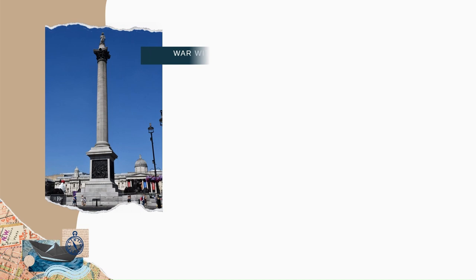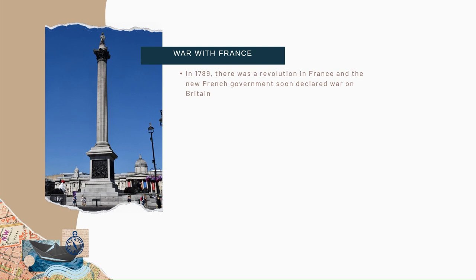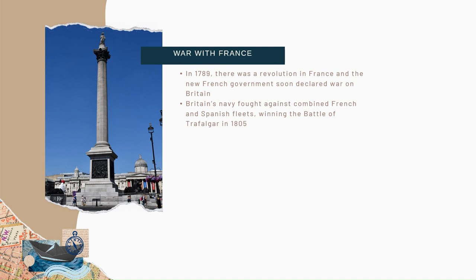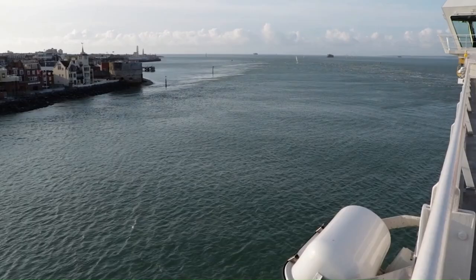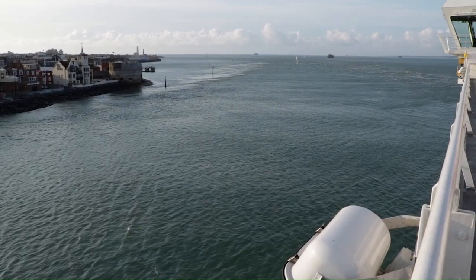War with France. During the 18th century, Britain fought a number of wars with France. In 1789, there was a revolution in France and the new French government soon declared war on Britain. Napoleon, who became Emperor of France, continued the war. Britain's navy fought against combined French and Spanish fleets, winning the Battle of Trafalgar in 1805. In 1815, the French wars ended with the defeat of the Emperor Napoleon by the Duke of Wellington at the Battle of Waterloo. Wellington was known as the Iron Duke and later became Prime Minister. Admiral Nelson was in charge of the British fleet at Trafalgar and was killed in the battle. Nelson's column in Trafalgar Square, London, is a monument to him. His ship, HMS Victory, can be visited in Portsmouth.